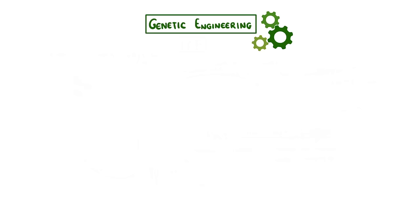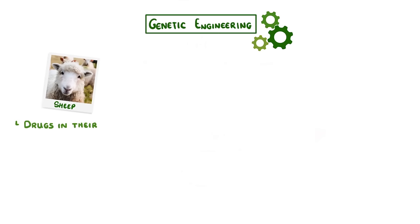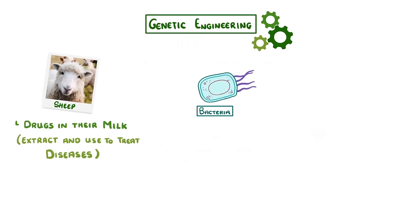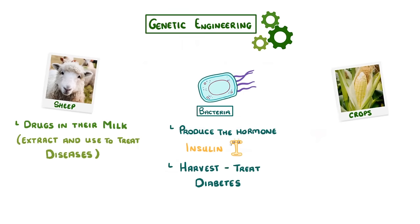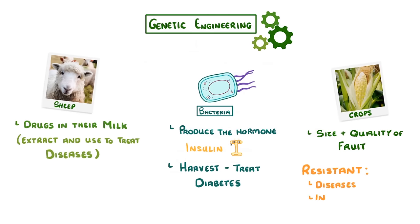We've now genetically engineered all sorts of genes into all sorts of organisms. For example, some sheep have been genetically engineered so that they can produce substances like drugs in their milk, which we can then extract and use to treat diseases. In a similar way, we've genetically engineered bacteria to produce the human hormone insulin, so that we can harvest it and use it to treat diabetes. And we've genetically modified crops to do all sorts of things, from improving the size and quality of their fruit, to becoming resistant to diseases, insects, and herbicides.